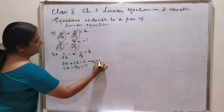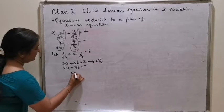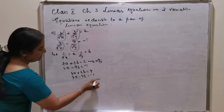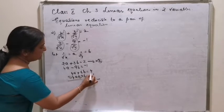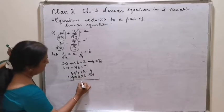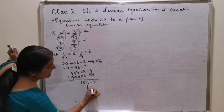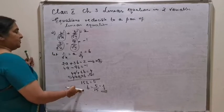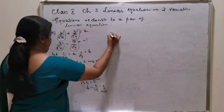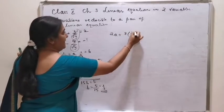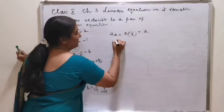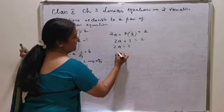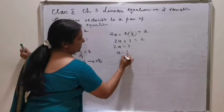Using the elimination method: multiply the first equation by 2 to get 4a plus 6b is equal to 4. The second equation is 4a minus 9b is equal to minus 1. By changing the signs and subtracting: 15b is equal to 5, or b is equal to 5 by 15, which equals 1 by 3. Substituting in the first equation: 2a plus 3 into 1 by 3 is equal to 2, so 2a plus 1 equals 2, giving 2a equals 1, or a equals half.